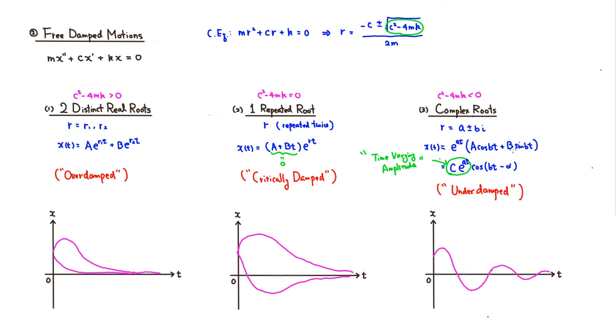So these are the three cases of free damped motion, depending on the strength of the damping. Of course, you're going to get a different kind of motion. That's it. I hope that this was clear.